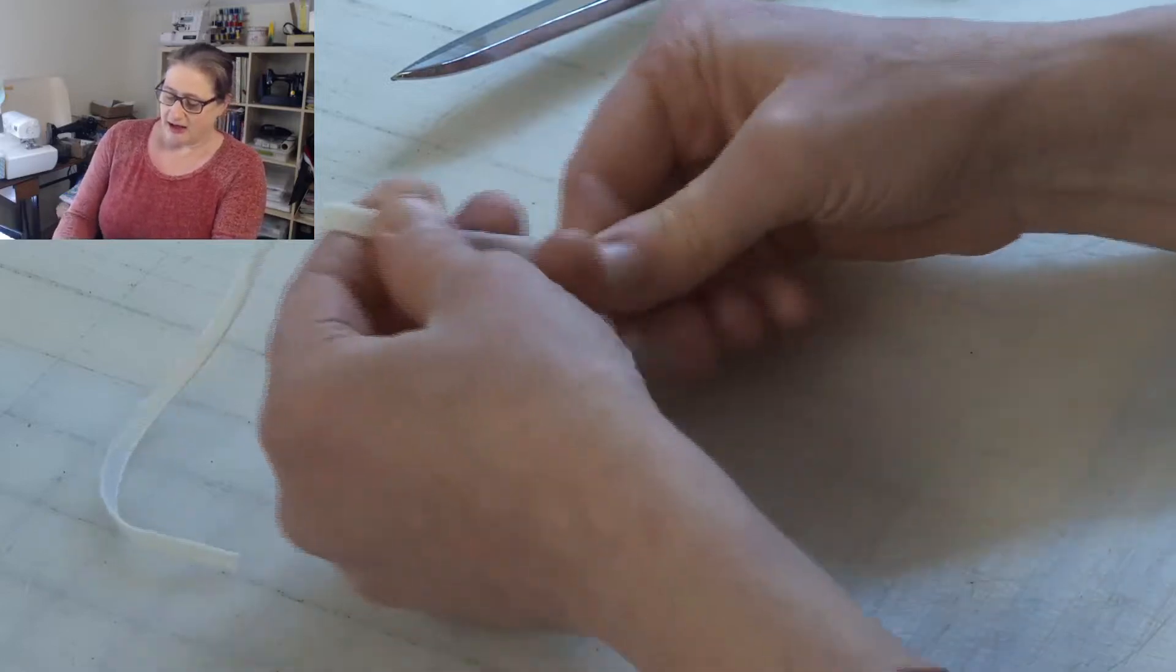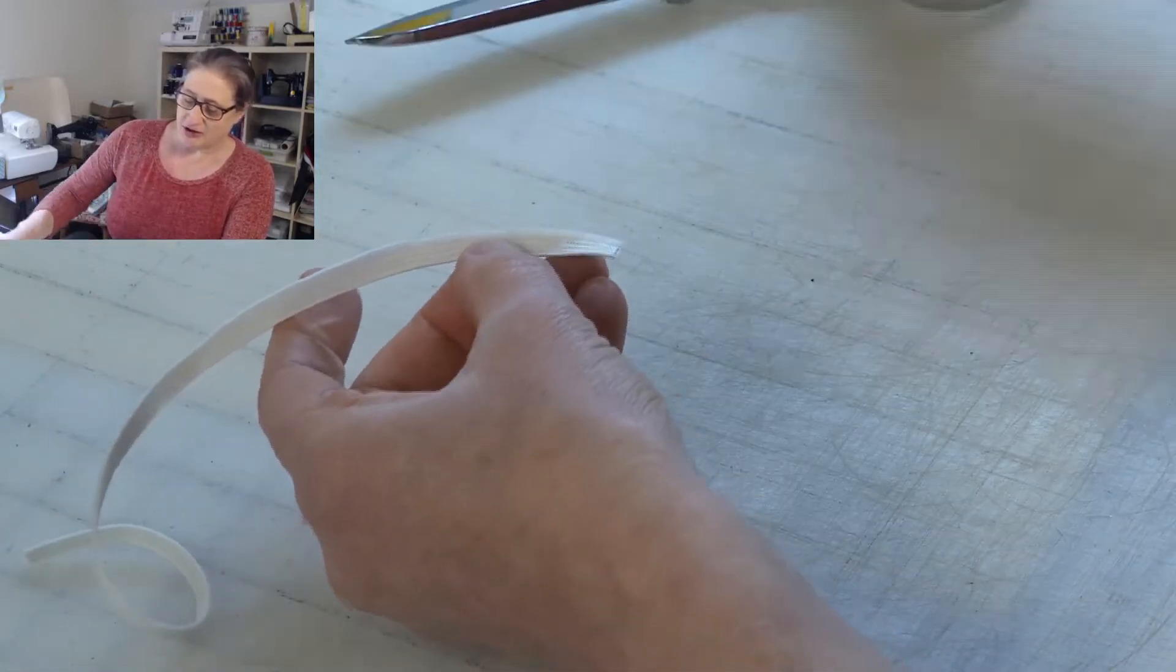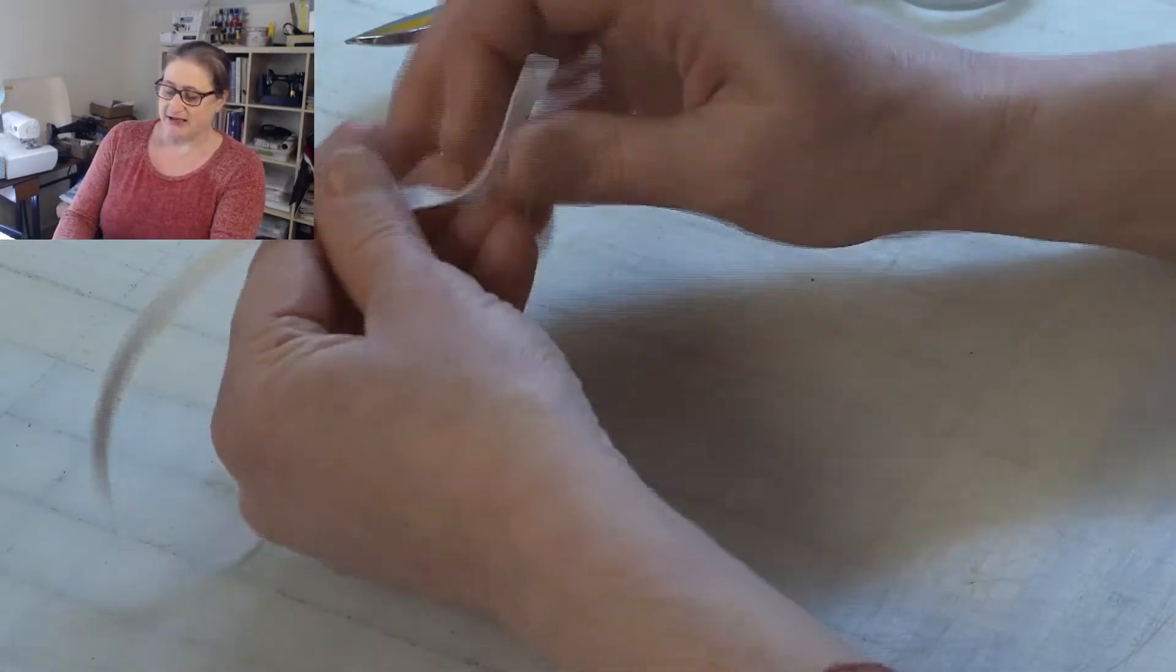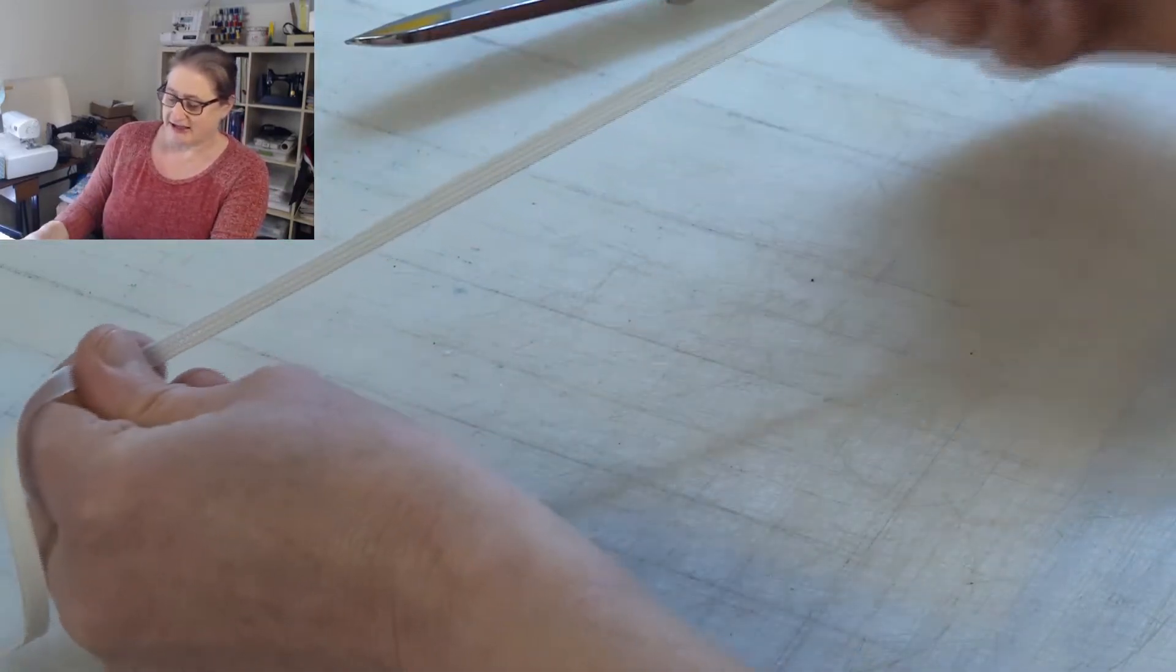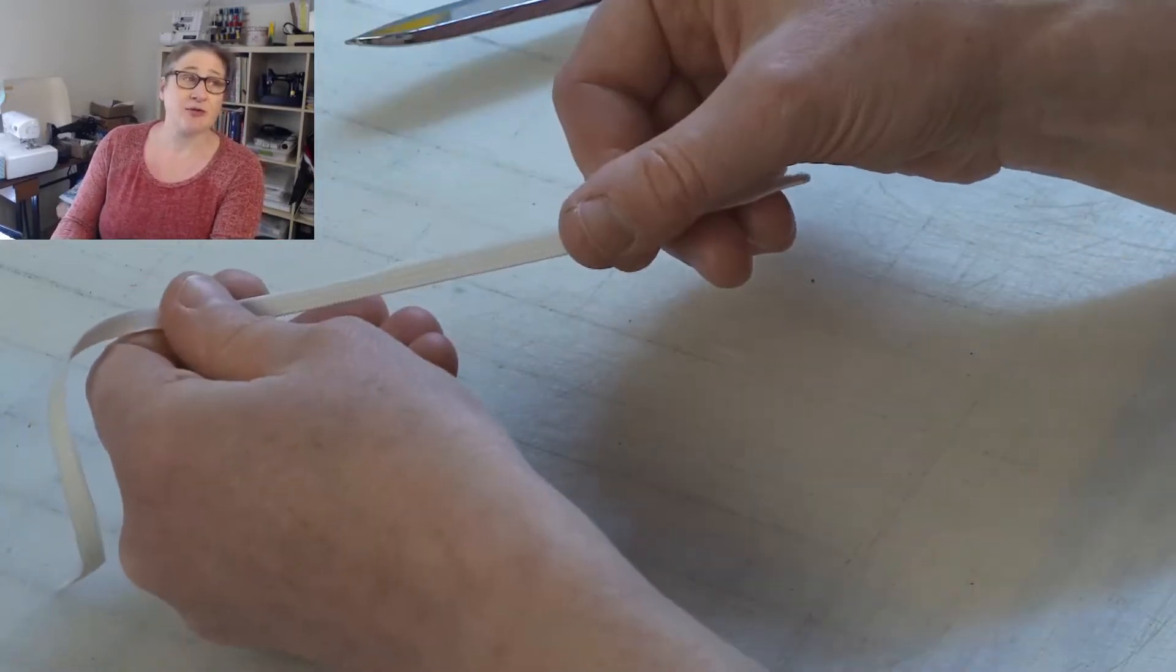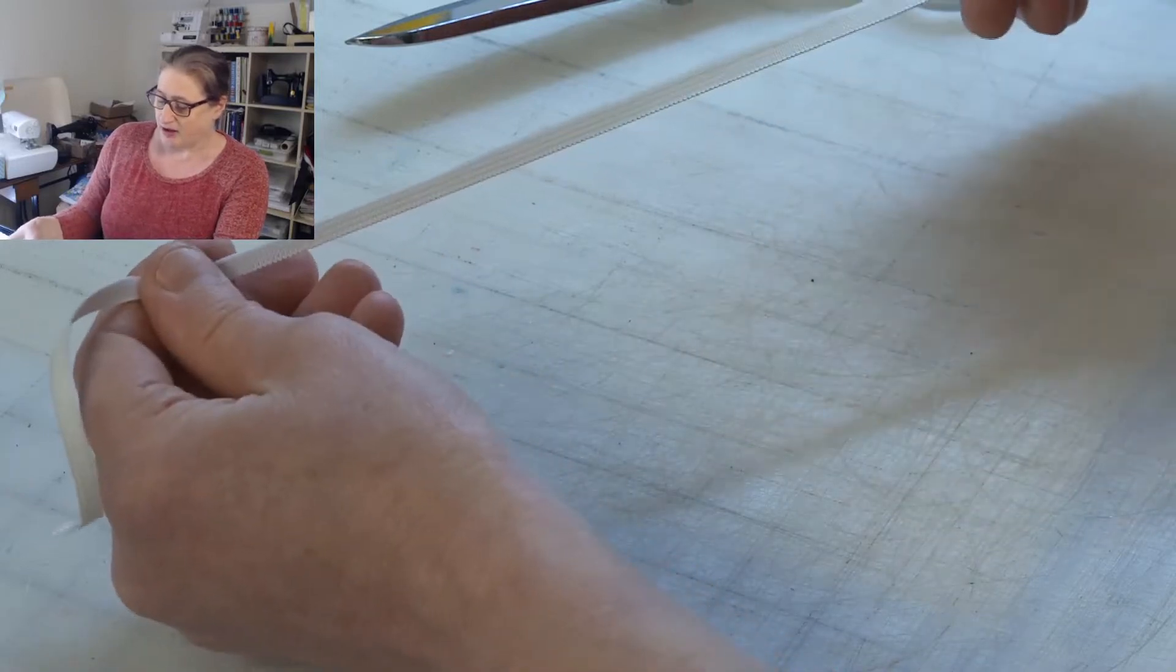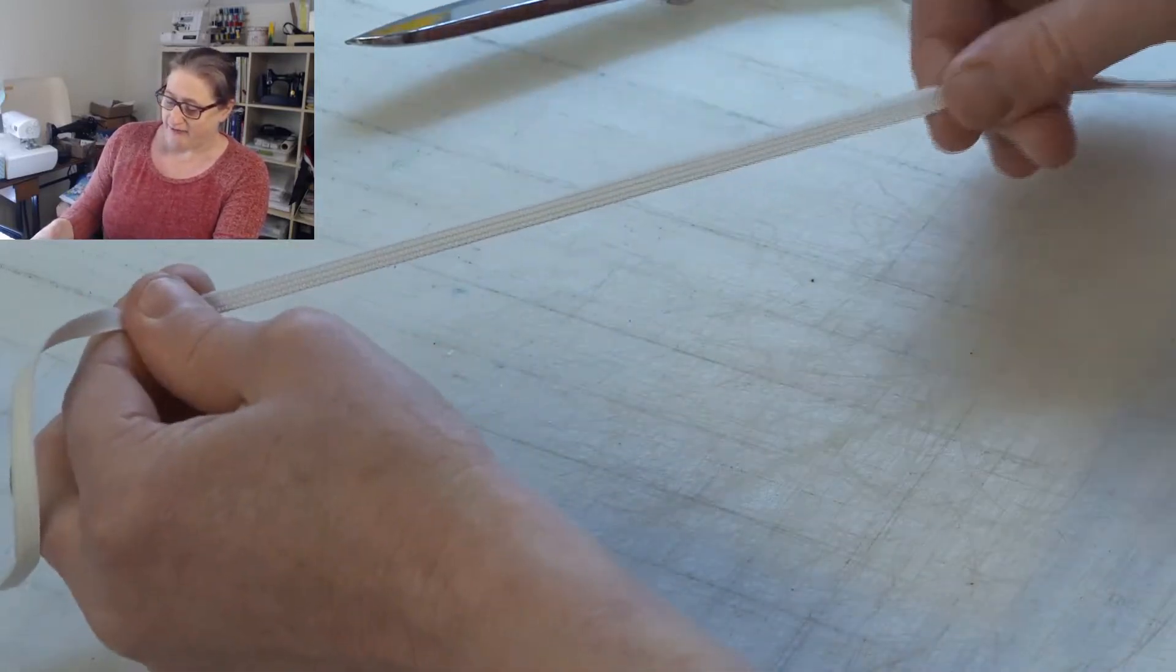it's not going to fray further. So even though this looks fuzzy now, the damage is done. It's stopped now because if you cut through one ridge by accident, it won't fray further than that.